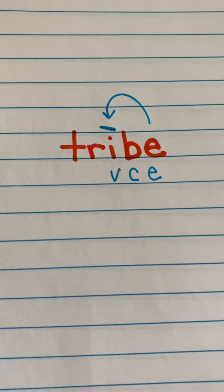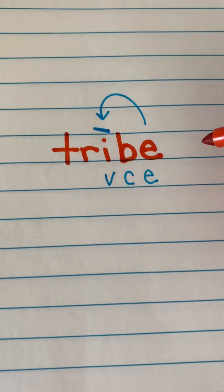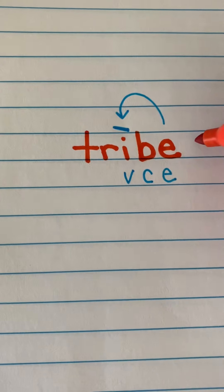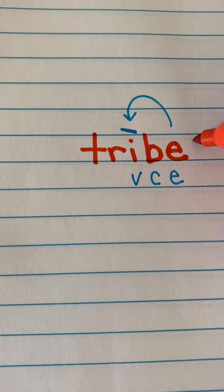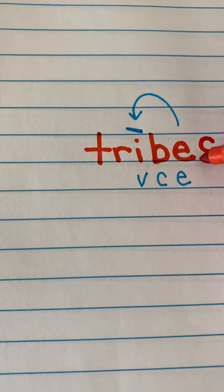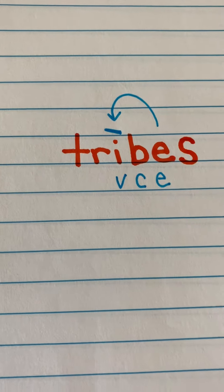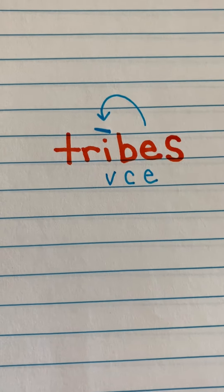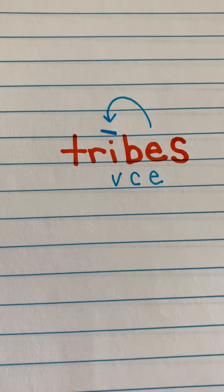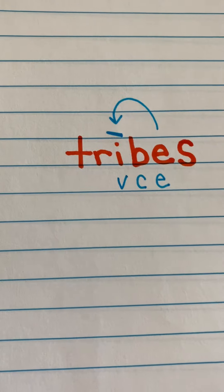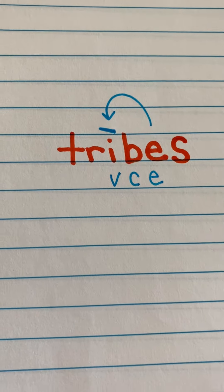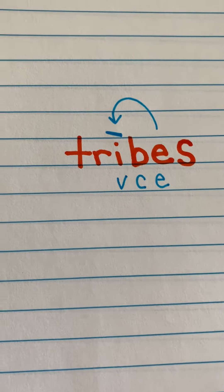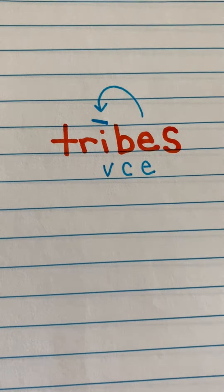Now I'm going to do something to this word. I'm going to add a suffix to this word — I'm going to add the suffix S. And when I add that suffix S, it makes this word plural. Plural means more than one.